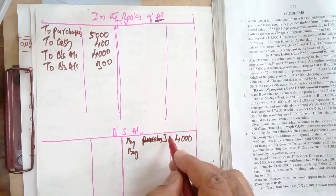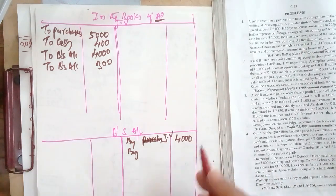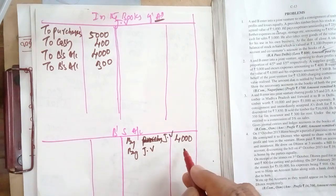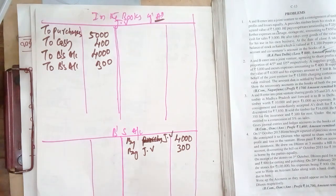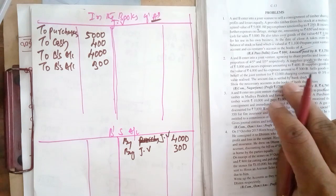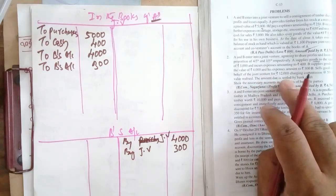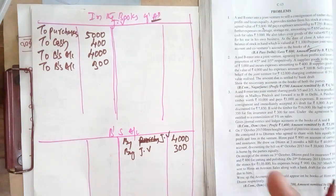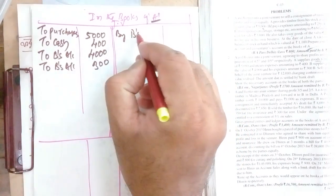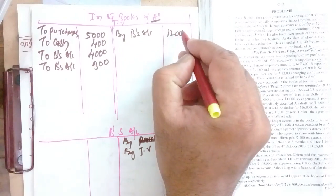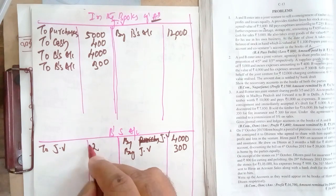Sorry, a correction here — it should not be 'purchases' but 'joint venture.' So be careful: it should be written as joint venture. The expenditure incurred by B is 300 in B's personal account. Once the expenditure is done, B sells the goods on behalf of the joint venture for 12,000. Since B is selling, we write: by B's account — 12,000, and in B's account: to joint venture — 12,000.